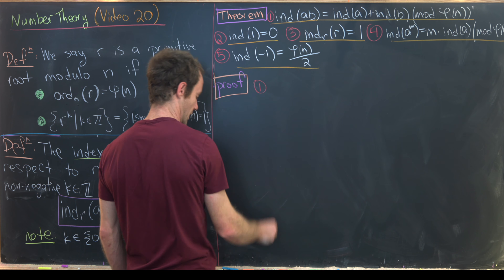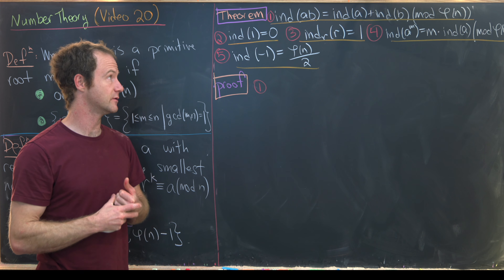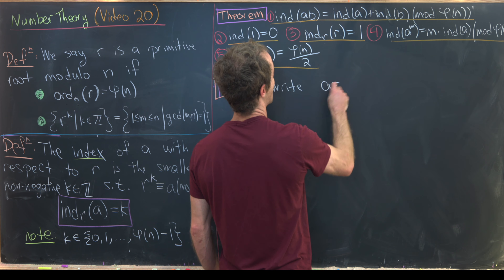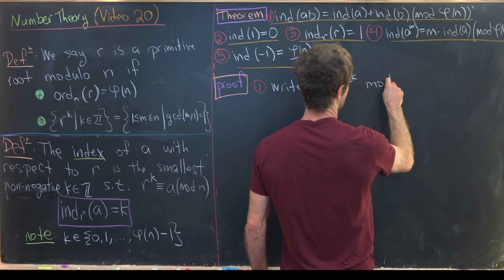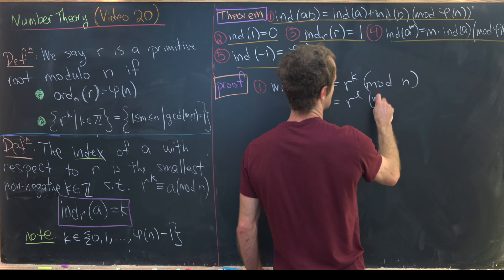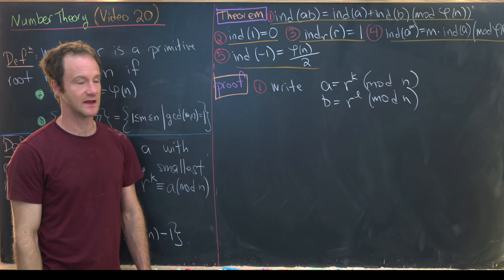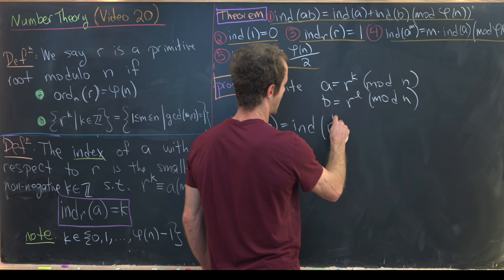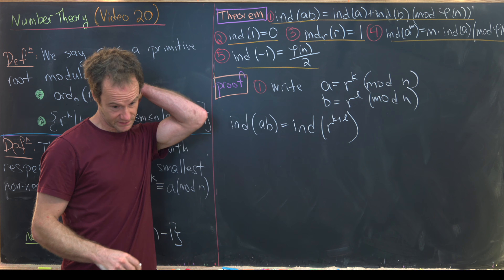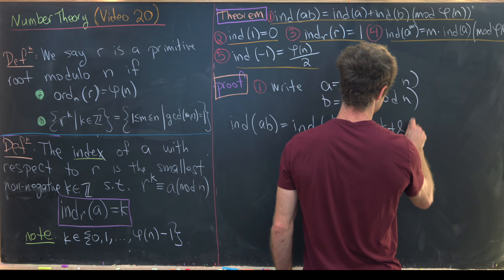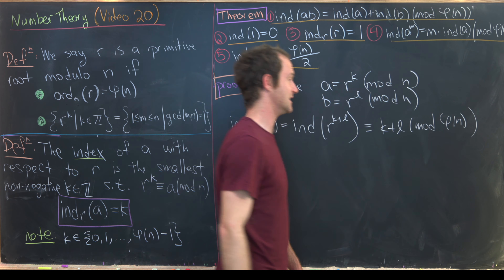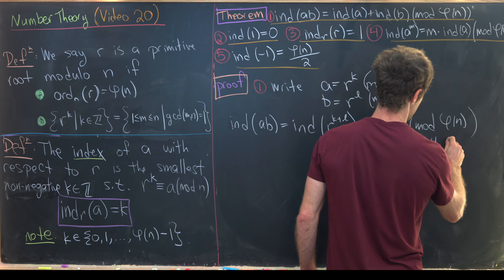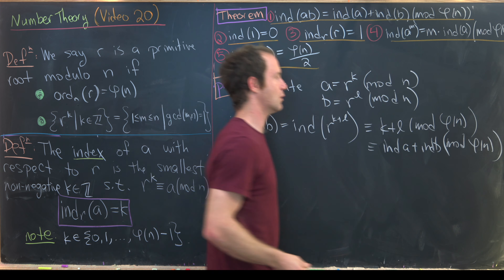For property 1, let r be our primitive root, with a and b relatively prime to n. Write a ≡ r^k mod n and b ≡ r^l mod n. Then ind_r(ab) = ind_r(r^(k+l)) ≡ k + l mod φ(n) by the definition of the index. But that's exactly ind_r(a) + ind_r(b) mod φ(n), which is what we want.